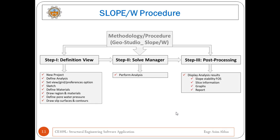The following methodology will be adopted while working in the Slope W feature of GeoStudio for slope stability analysis. The methodology is divided into three steps. Step one is the definition view, step two is the soil manager, and step three is post-processing or result view. In step one, we define different materials and properties including: creating a new project, defining analysis, setting view or grid preferences and units, sketching axis lines, defining materials, drawing regions and materials, defining pore water pressure, and drawing slip surfaces and contours. In step two we perform the analysis, and in step three we display results like factor of safety, critical slip information, slice information, graphs, and reports.